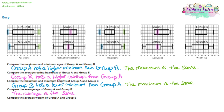Moving on to question five, we're going to be comparing medians again. Highlight the averages. This time it seems that group A has a higher average — group A is at 84, but in group B it's at 80. So we can write group A has the higher average, or higher median to be more accurate.